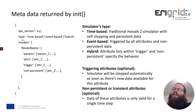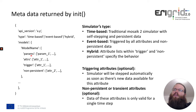After defining the type, we have to define our models which are part of the simulator. First we provide a model name. Then the parameters — these are the values provided before the simulation to parametrize the model. Then we have the attributes, which are the values exchanged during simulation as inputs and outputs of the simulator. For the hybrid type, we can define which attributes should be triggered and which should be non-persistent.